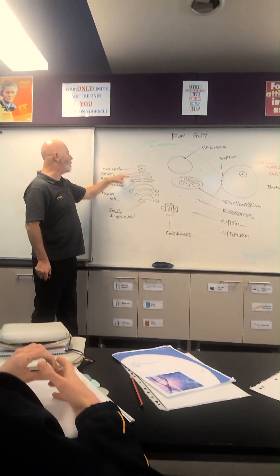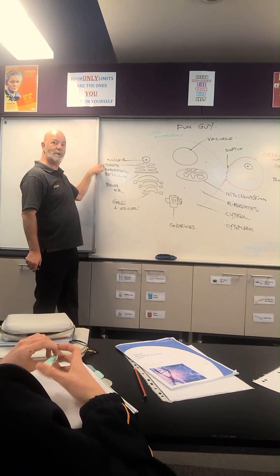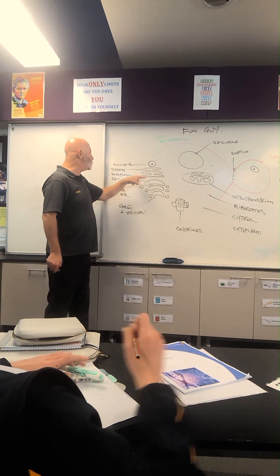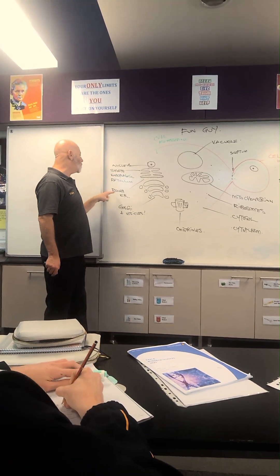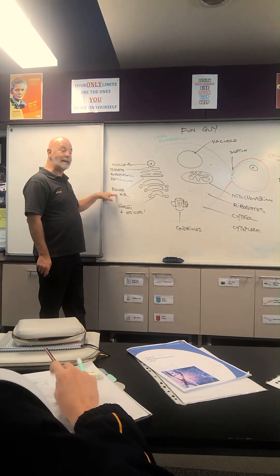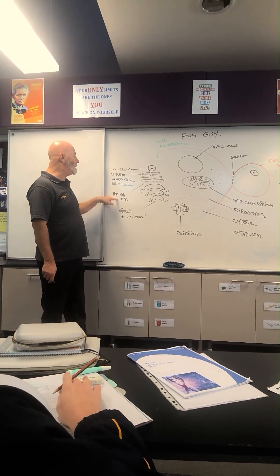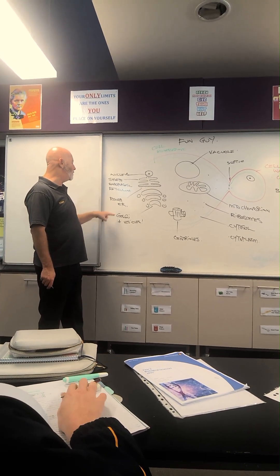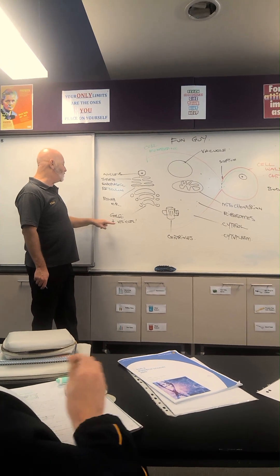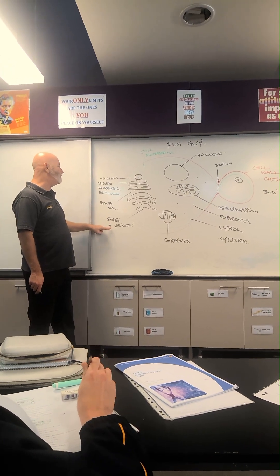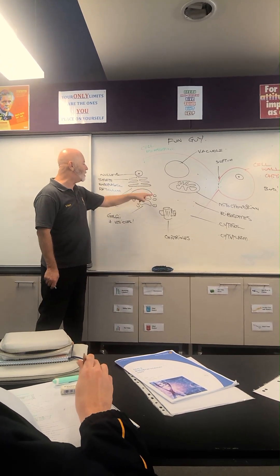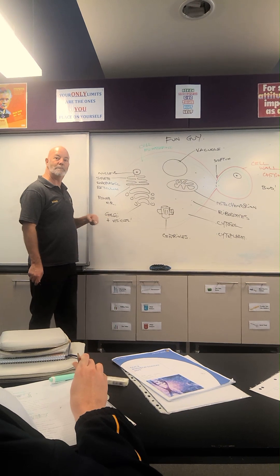The one without ribosomes is called the smooth endoplasmic reticulum. The one with ribosomes is called a rough endoplasmic reticulum. Normally near the endoplasmic reticulum, they've got the Golgi body. And branching off the Golgi body are the vesicles, which are these circles here, where the whole one is being packaged.